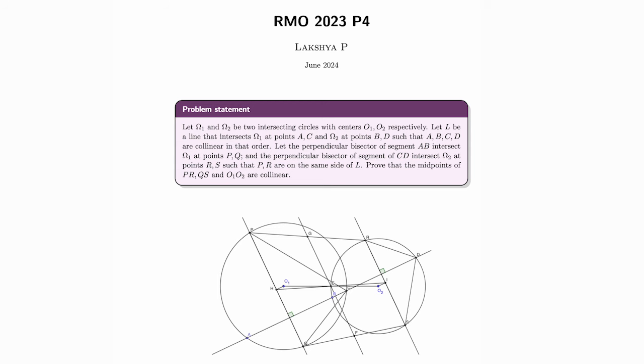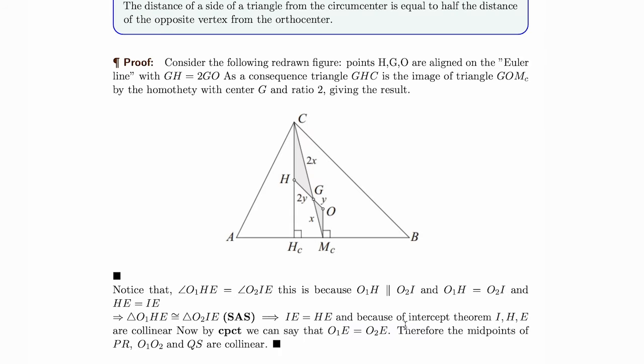Now, we look at the following proposition. The proposition states that the distance of a side of a triangle from the circumcenter is equal to half the distance of the opposite vertex from the orthocenter. So, that basically says that half CH is equal to OMC.